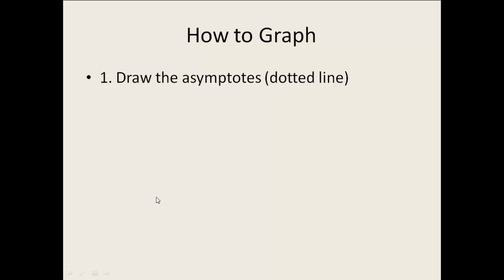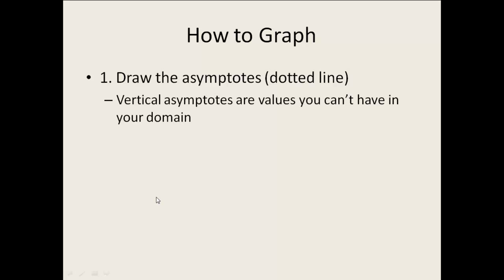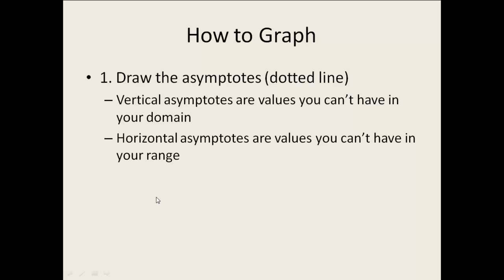When we actually get into graphing, it's basically a three-step process. The first thing we need to do is draw our asymptotes, and I want you to use a dotted line because they're not actually part of your graph — they're more of a reference point, a guideline. You always have to consider vertical and horizontal asymptotes. Vertical asymptotes are the values you can't have in your domain, coming from dividing by 0. Horizontal asymptotes are the values you can't have in your range.